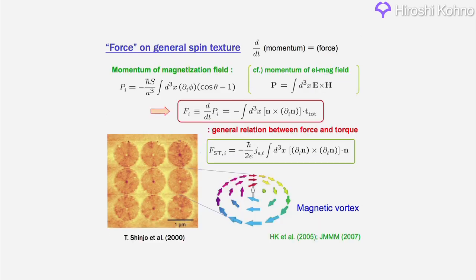The equations Professor Kono obtained led to the idea of driving magnetic vortices by currents, which he suggested to experimenters.